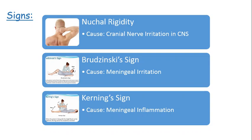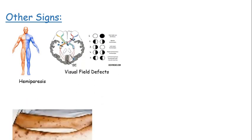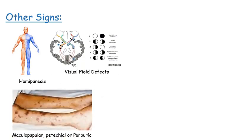Kernig sign is elicited by flexing the patient's hip joint and then trying to extend the knee joint — the patient feels pain in the same leg and flexes the opposite leg at the knee joint. Kernig sign is due to meningeal inflammation.